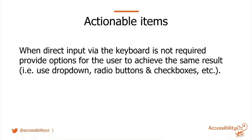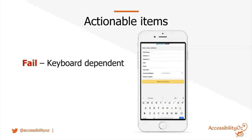When direct keyboard input is not required, provide options such as dropdowns, radio buttons, and checkboxes. An example from Amazon Prime Now shows a country set to the United States but requiring the user to type in the state — there are only 50 states in the US, and it should really be a dropdown. That's one of the methodology factors.